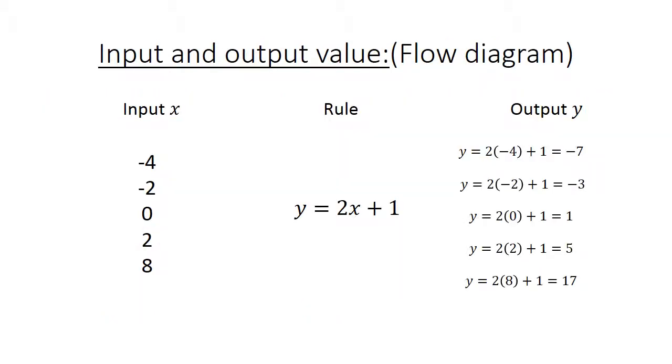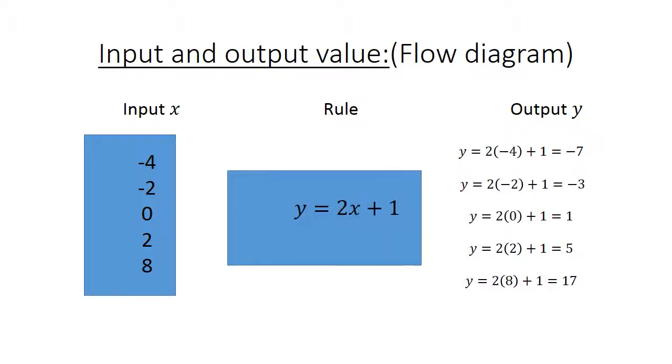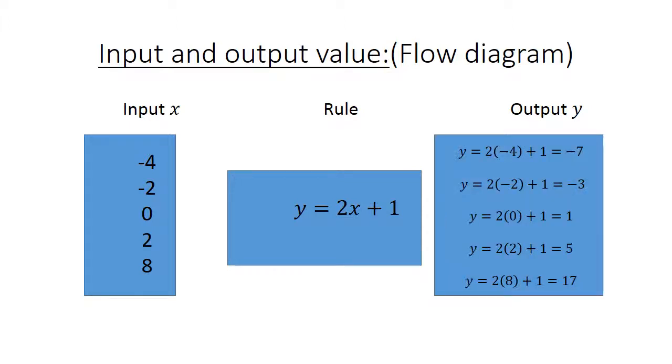Now we use the flow diagram. If my input is negative 4, there is my input. You have the rule in the middle and my output. Let's start with the first one, negative 4. You substitute your X: Y equals 2 times negative 4 in brackets plus 1 equals negative 7.